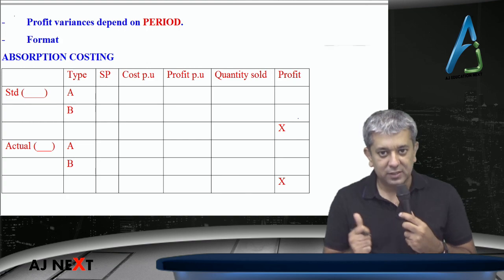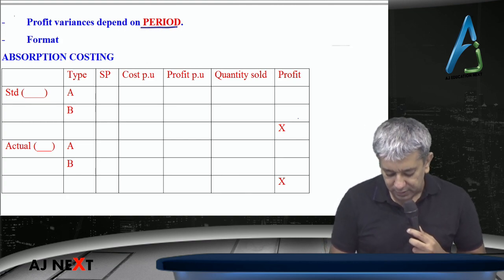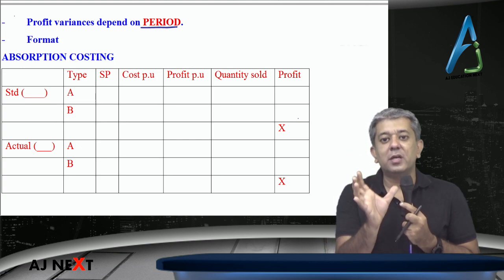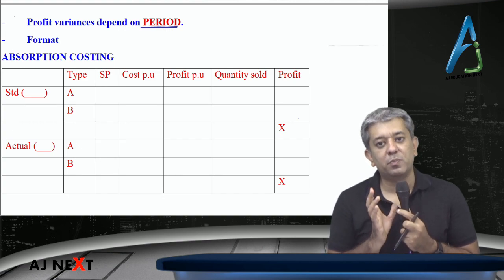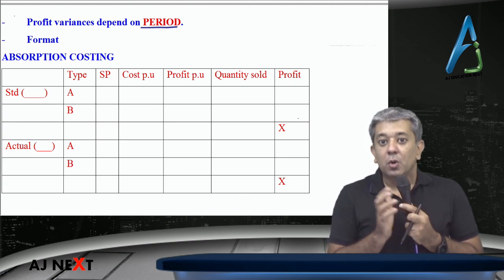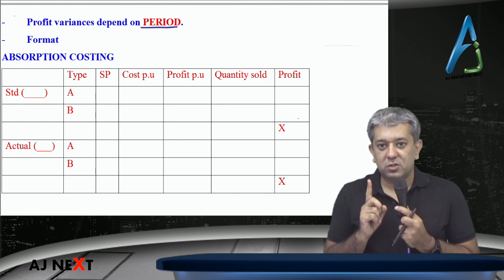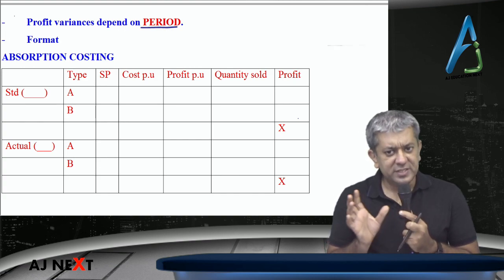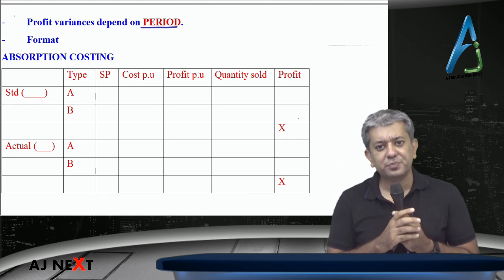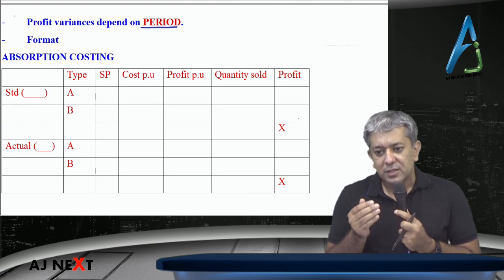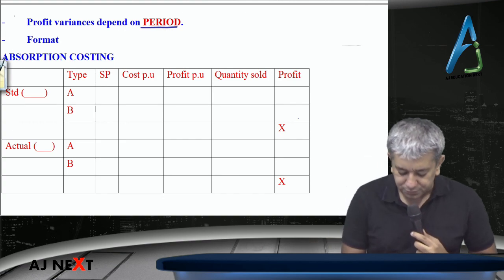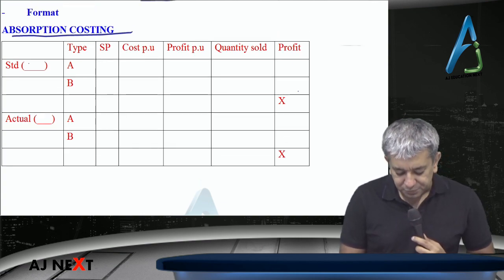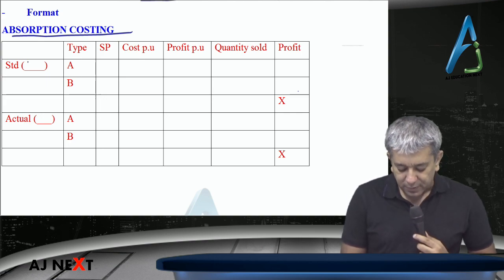Profit variances, like sales profit variances and fixed rates, will be dependent upon the period. If you think about profit variances, think about this: how much did you earn in this period? Many things will be the same as sales variances from the previous lecture. The difference is that sales variances show the impact of everything on sales, while this shows the impact of everything on profit. This is under Absorption Costing and Standard Costing. Profit variances are dependent upon the period.